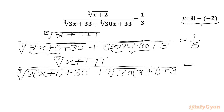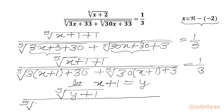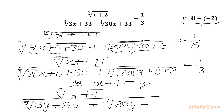Now let us assume x+1 equal to y. So I will write our equation as 5th root of (y+1) in the numerator. In the denominator we will write 5th root of (3y+30) plus 5th root of (30y+3), equal to one third.